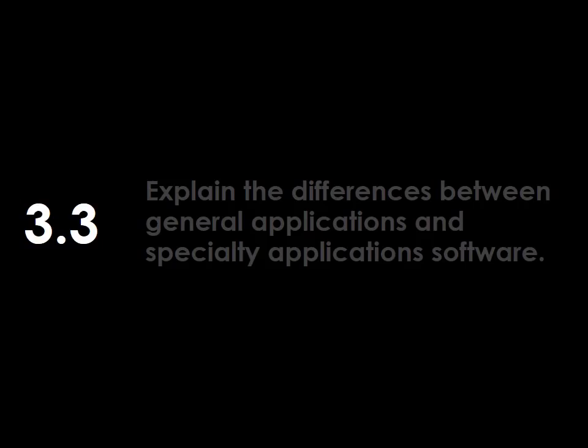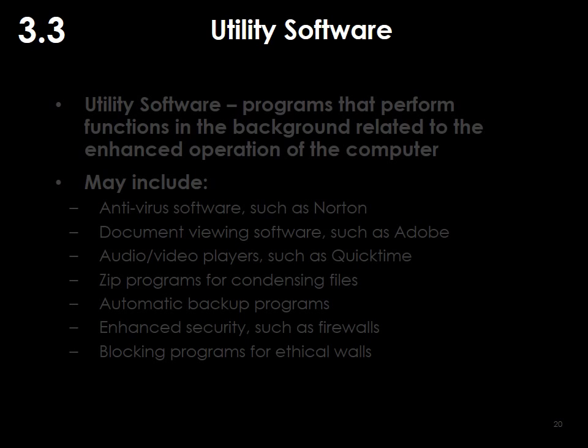Section 3.3 explains the differences between general and specialty application software. There is utility software — programs that perform special functions in the background related to enhanced use of a computer. Examples include antivirus software like Norton's, document reviewing software like Adobe Acrobat or Adobe Reader, audio-visual players such as QuickTime, zipping programs for compressing files to attach in email, and automatic backup programs. Law firms sometimes have different backup programs because of e-discovery requirements.